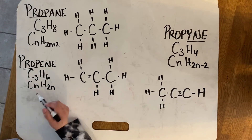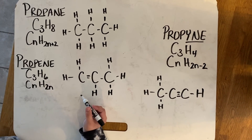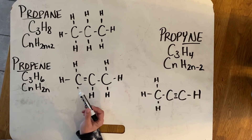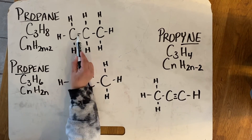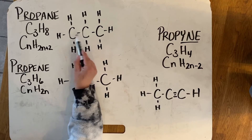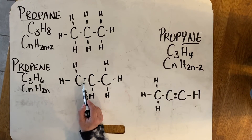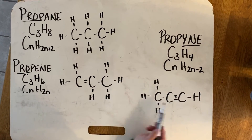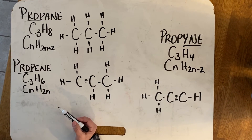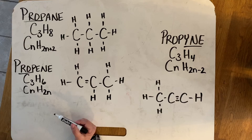So these are all hydrocarbons. What tells me that propane is saturated is that it has only single bonds. The fact that propene has a double bond and propyne has a triple bond makes them unsaturated.